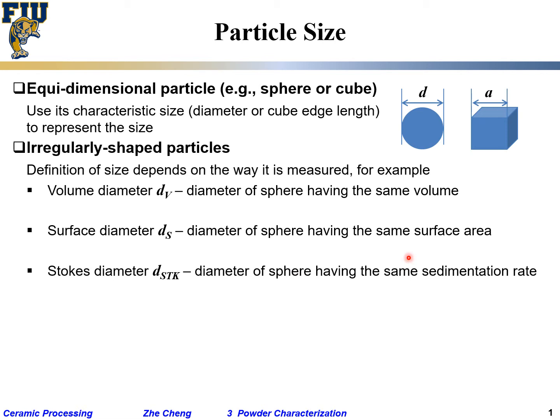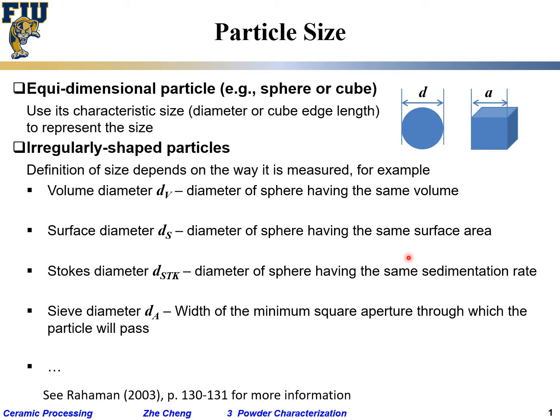Sedimentation refers to how fast particles drop from suspension to the bottom within a liquid. And sieve diameter—what's the diameter that would go through a certain mesh or sieve?